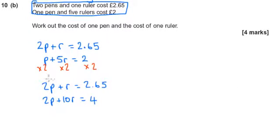And then what we do is we look at the signs of the things we've just made the same. And if their signs are the same, we subtract. And if they're different, we add. So I'm going to subtract because they've both got a plus sign. So I'm going to do 2P take 2P is nothing. R take away 10R is negative 9R. And 2.65 minus 4 pounds is minus 1.35.